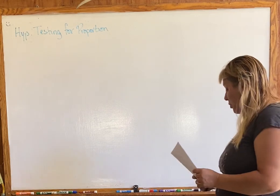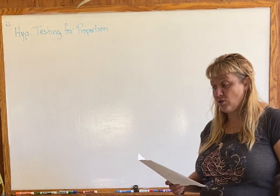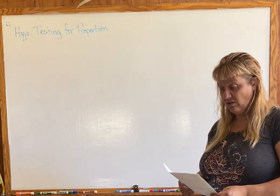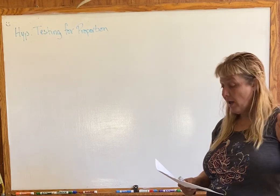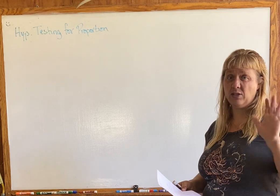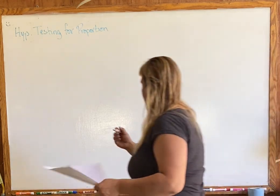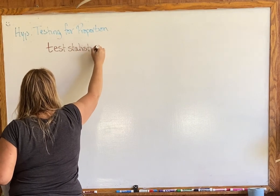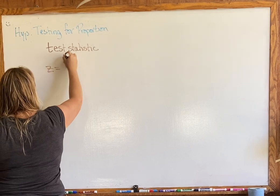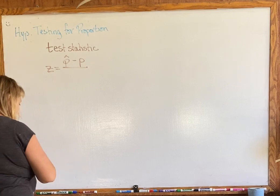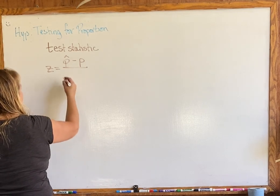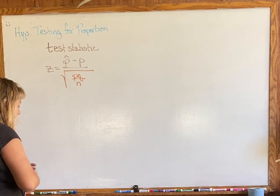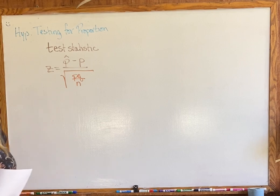There's really only one major difference here: instead of having means and standard deviations, we're going to have proportions. We just need to remember the Z-score formula and run through a couple of examples. The process is the same — it's just with p rather than mu. Our test statistic is Z equals p-hat minus p, all over the square root of pq over n.